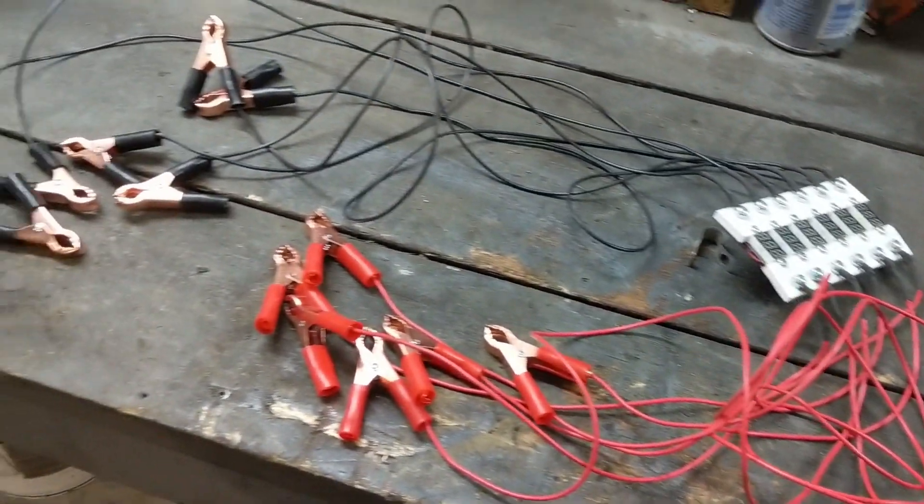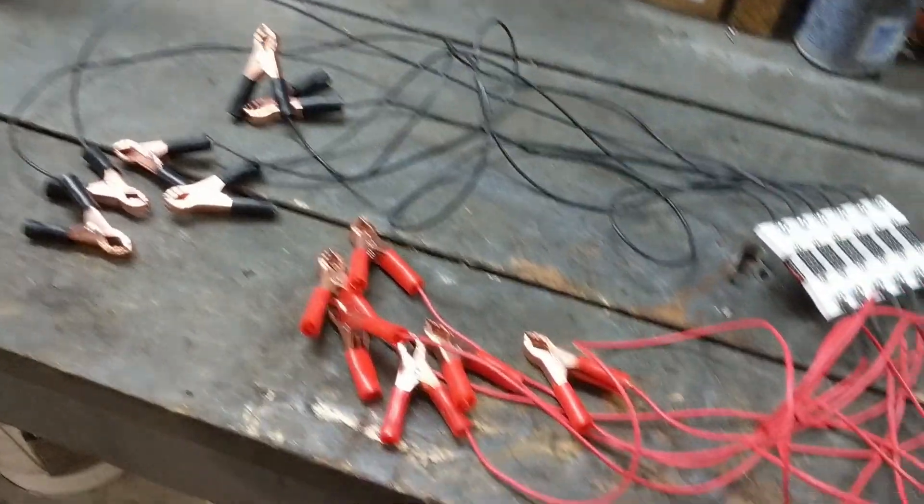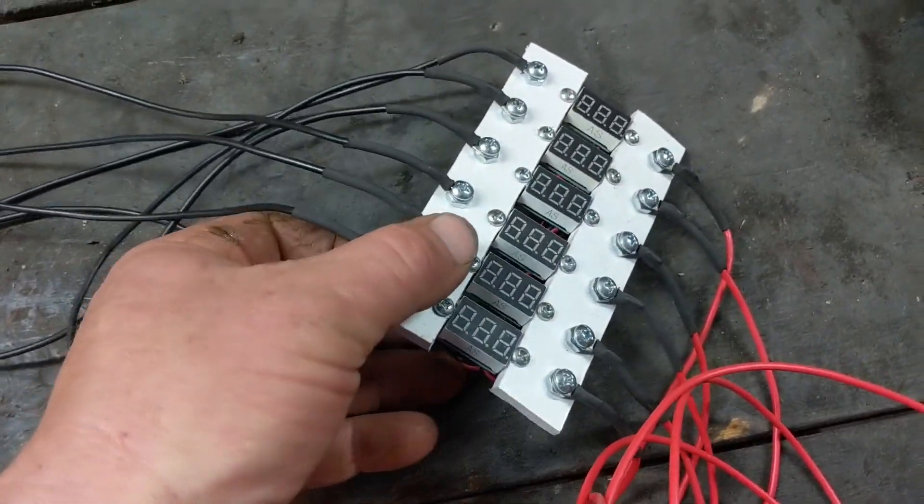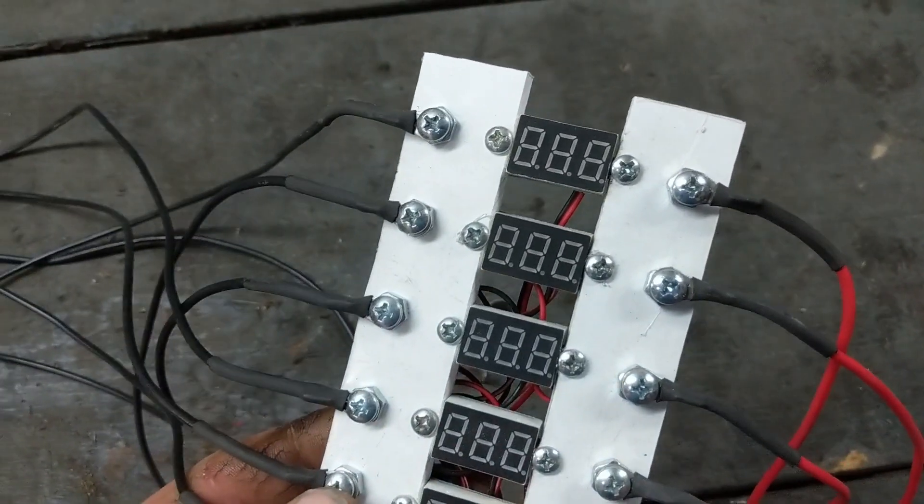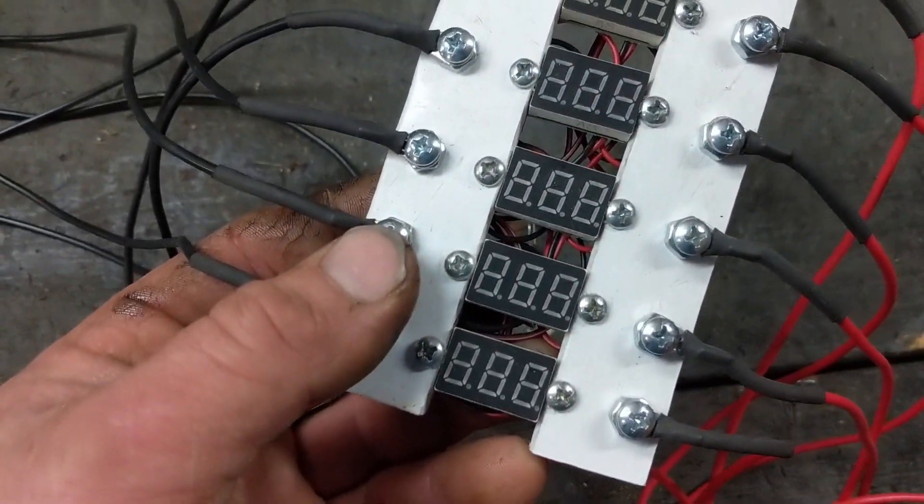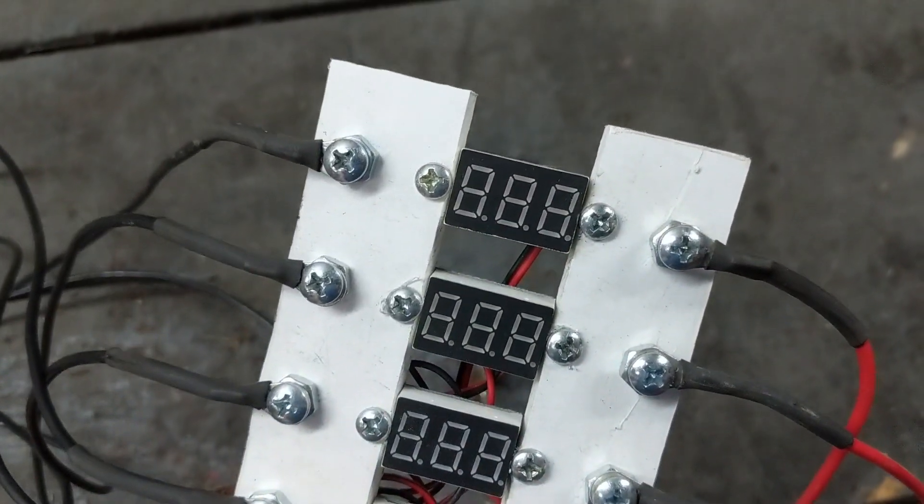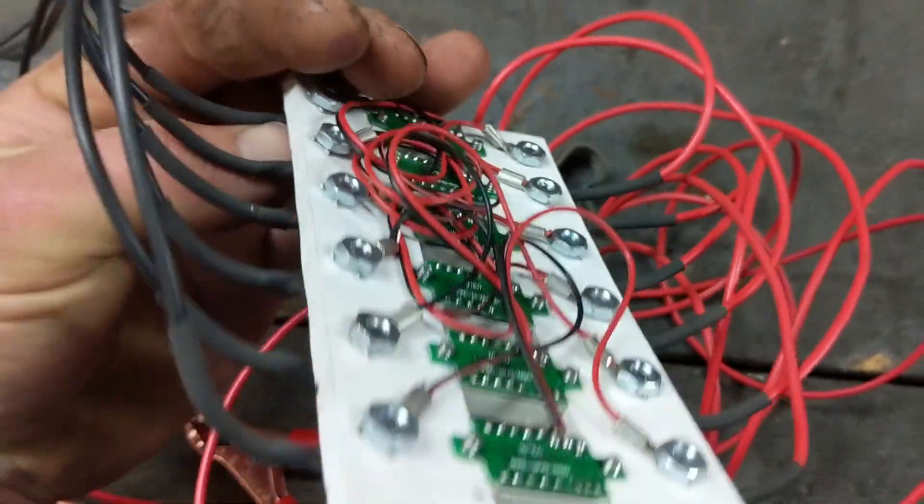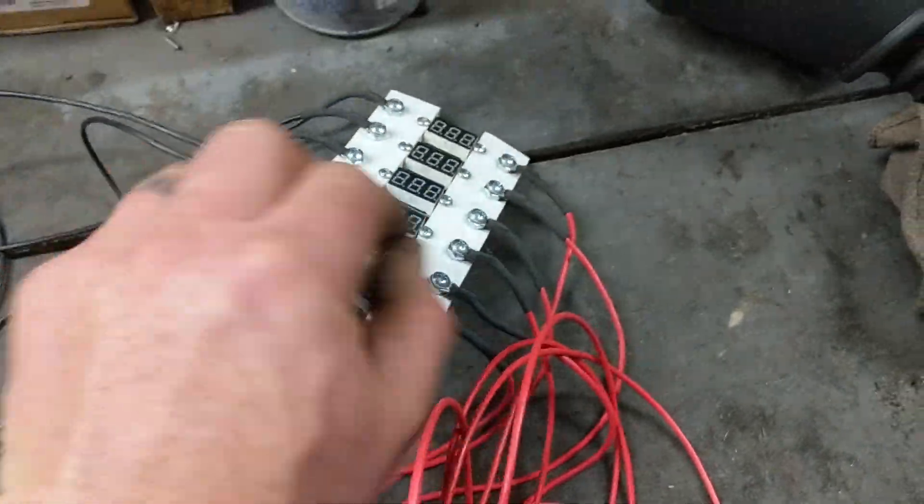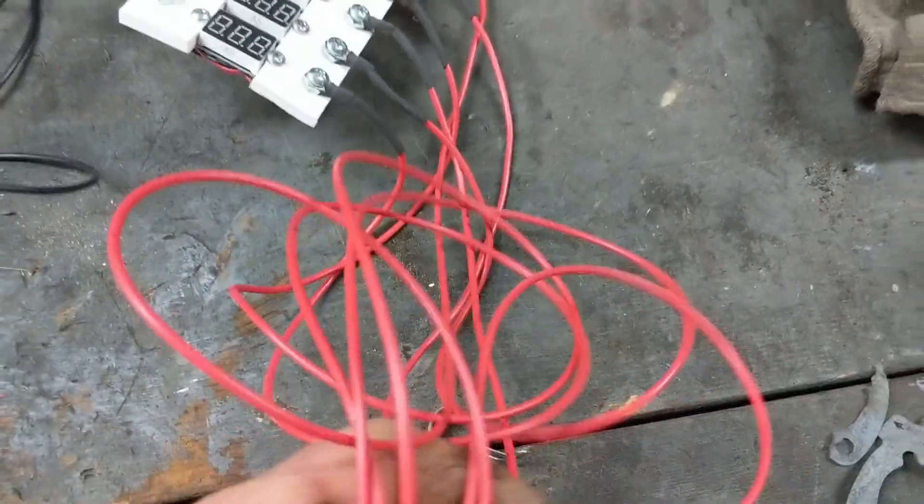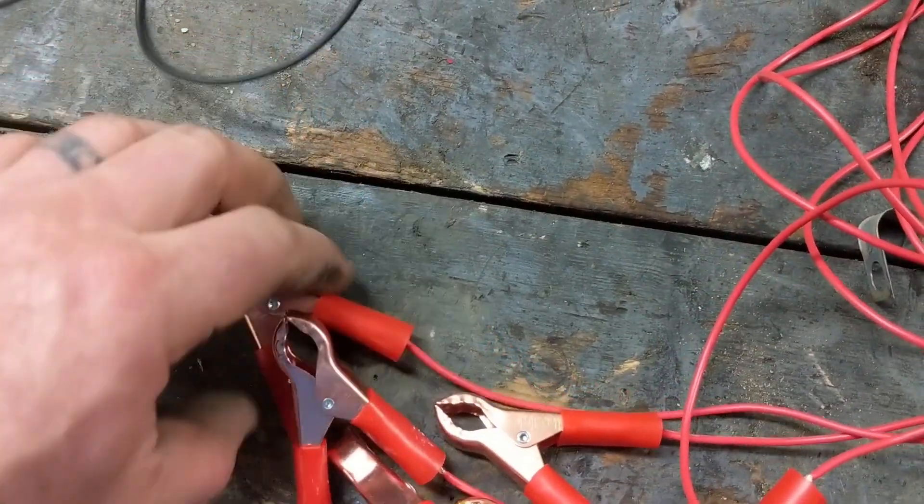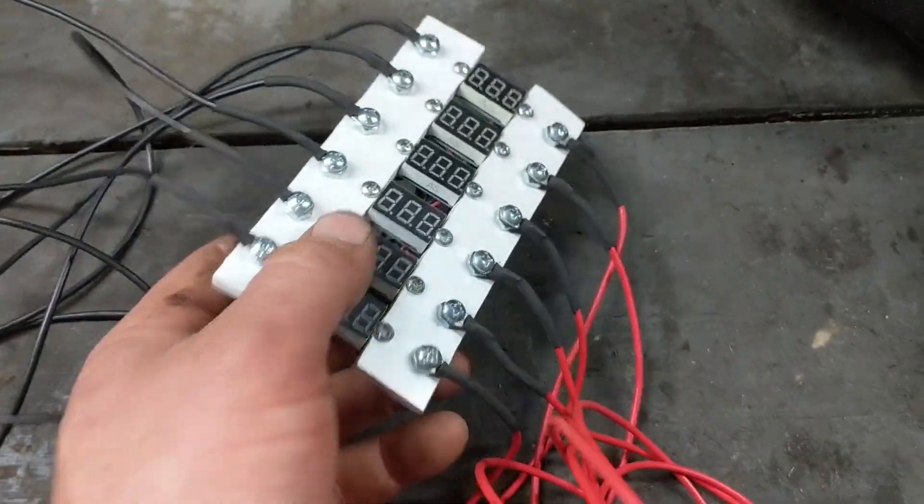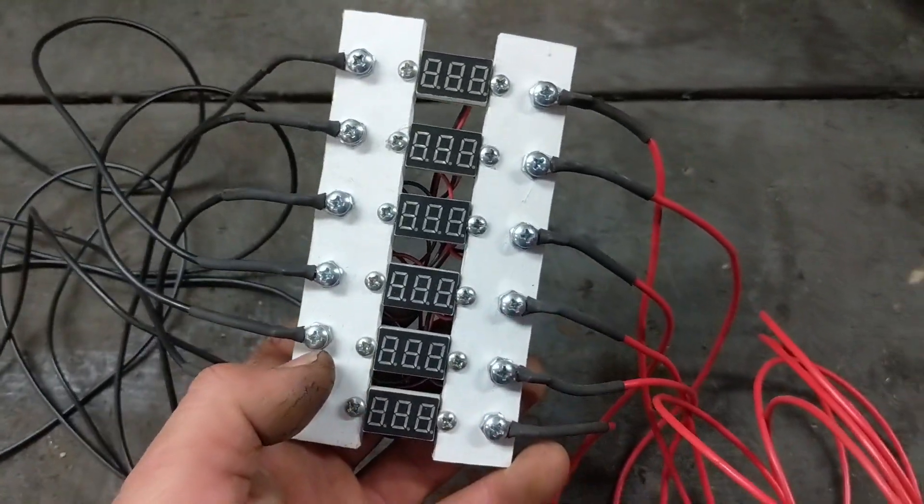Alright guys, here it is. This is my multiple battery voltage meter. What I've done is I've gone on my favorite website Amazon and picked up six of these digital readout volt gauges. They're pretty basic and I mounted them onto these two pieces of plastic. Then I connected a positive alligator connector to each positive side and I've done the same to the negative side.